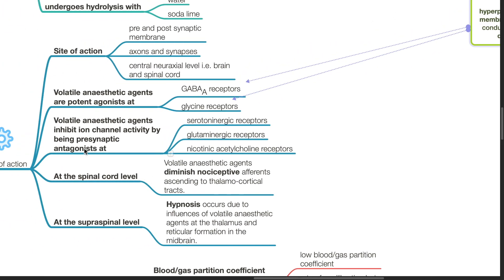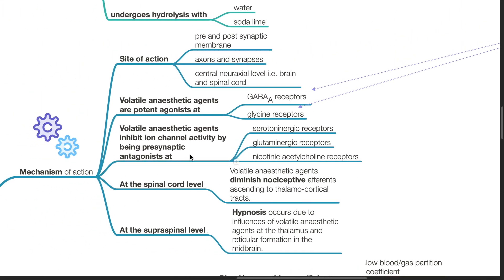Volatile anesthetic agents inhibit ion channel activity by being pre-synaptic antagonists at serotoninergic receptors, glutaminergic receptors, and nicotinic acetylcholine receptors. At a spinal cord level, volatile anesthetic agents diminish nociceptive afference ascending to the thalamocortical tracts. At the supraspinal level, hypnosis occurs due to influences of volatile anesthetic agents at the thalamus and reticular formation in the midbrain.